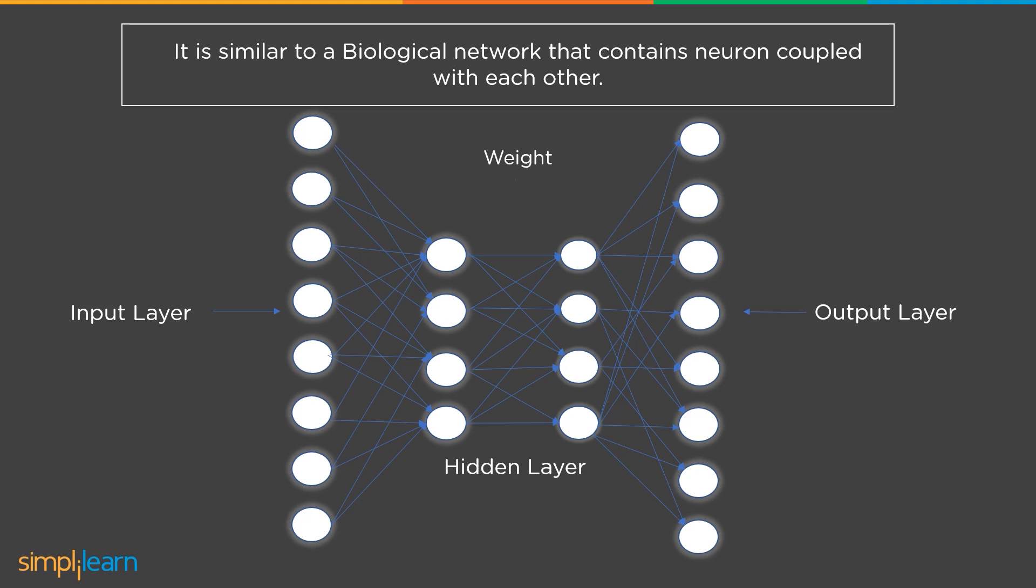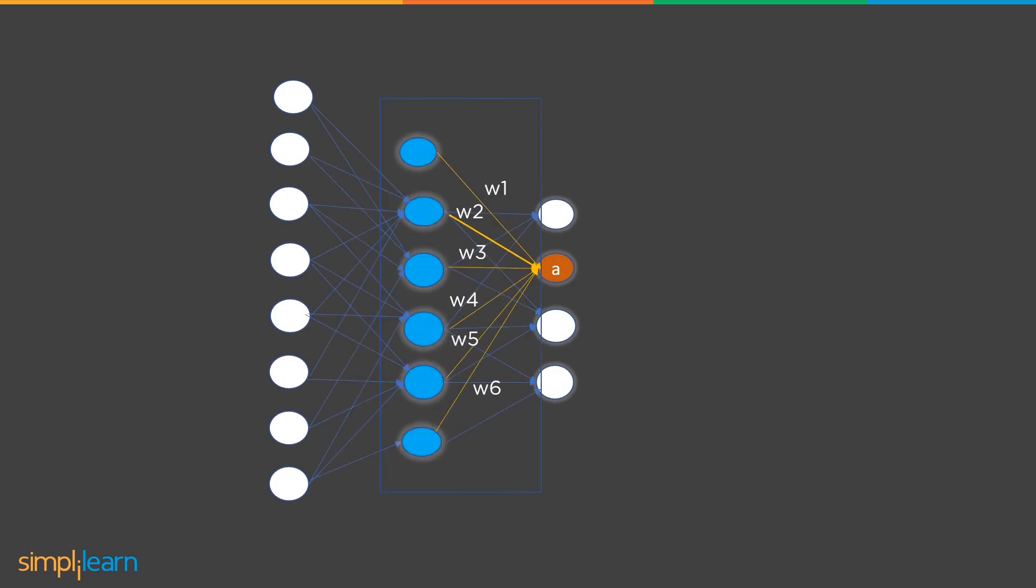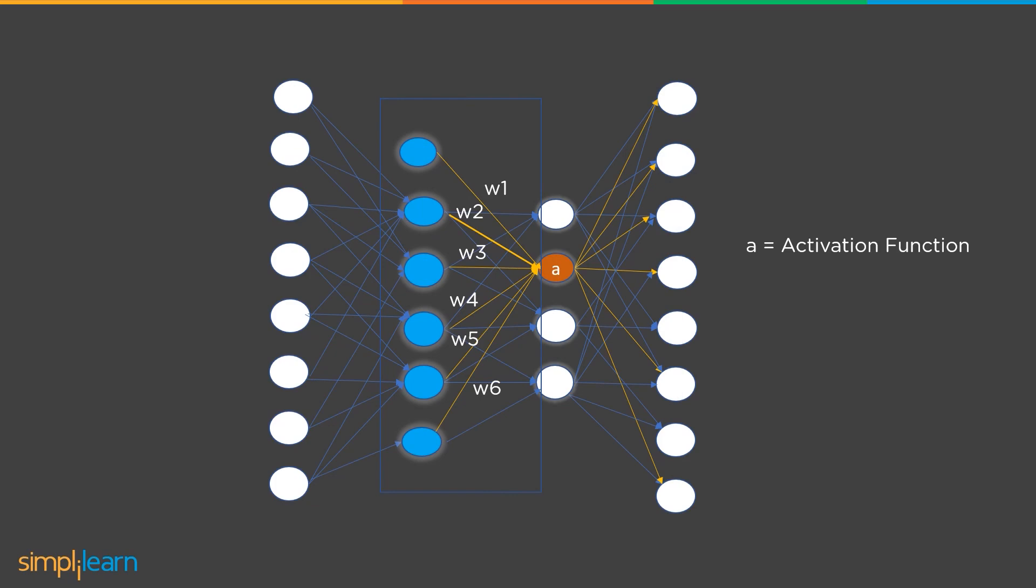Well, now that we've understood what the backpropagation algorithm is, we'll come to the next topic, the working of the backpropagation algorithm. The backpropagation algorithm is applied to reduce cost function and to reduce errors.